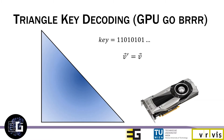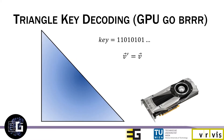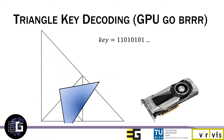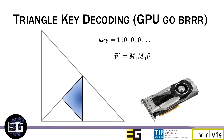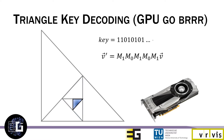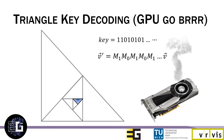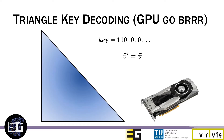We provide a small visualization of this procedure as the triangle is being decoded. As we can see, the more subdivisions a triangle has undergone, the more transformations and the more work is necessary for the GPU to recover the tessellated triangle. Also note that if we want to maintain the compact memory footprint of this encoding, this recursive decoding procedure must be done for each triangle in every single frame.